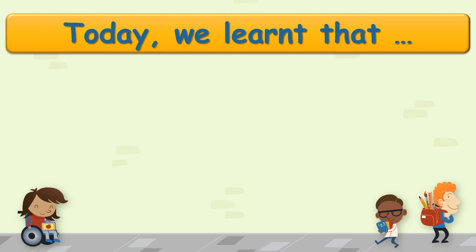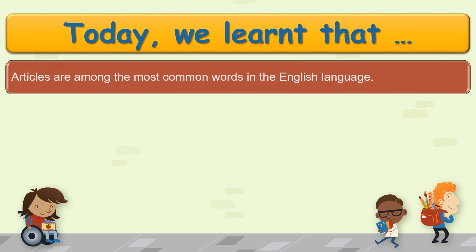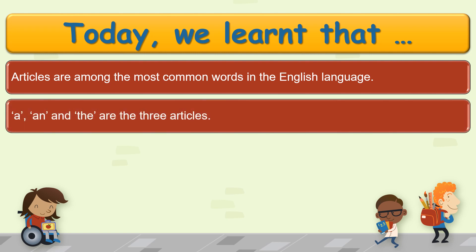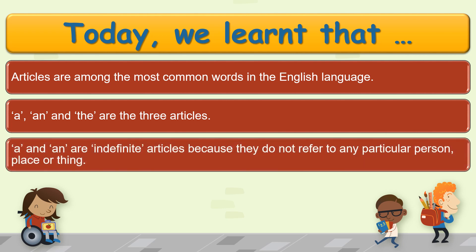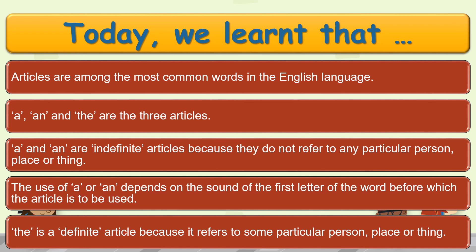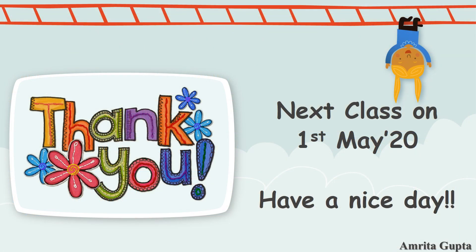So these were the several points to remember for the correct usage of A, AN and THE. Today we learnt that articles are among the most common words in the English language. A, AN and THE are the three articles. A and AN are indefinite articles because they do not refer to any particular person, place or thing. The use of A or AN depends on the sound of the first letter of the word. THE is a definite article because it refers to some particular person, place or thing. I hope you have understood how and where to use the articles. You will have your next class on 1st May. Have a nice day. Thank you.